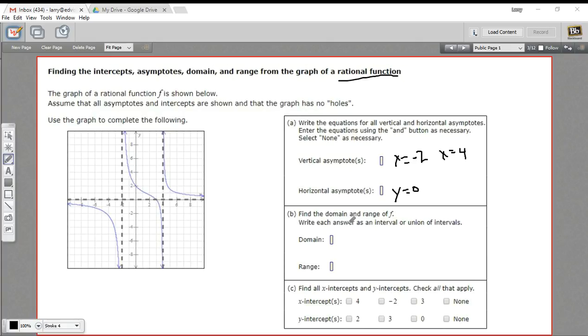Part B says, find the domain and range of f. And remember, domain is everything x can be, and range is everything y can be. So let's just scan across this graph and look at the x values. It definitely shoots out to negative infinity here and positive infinity here.